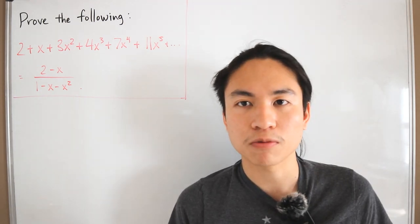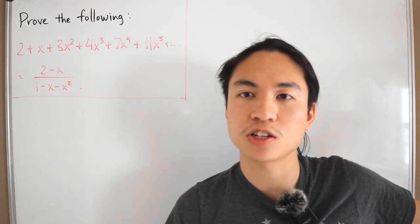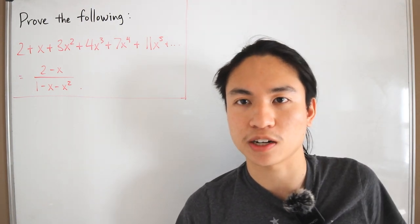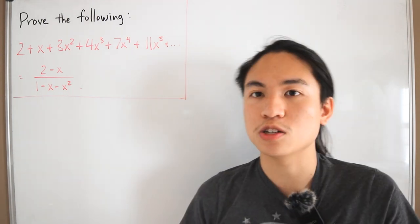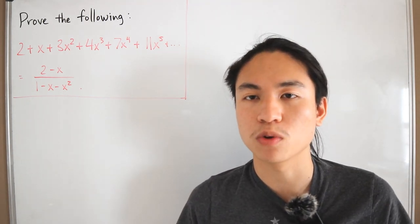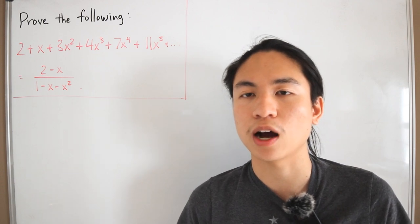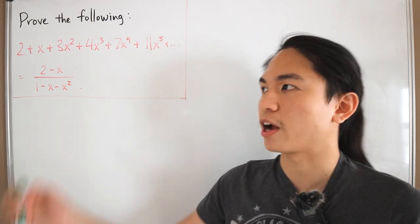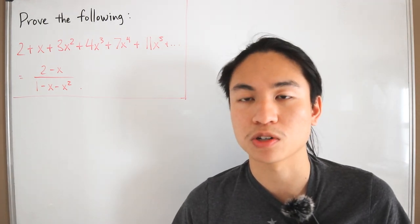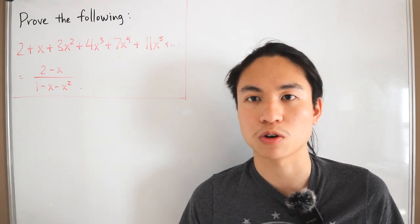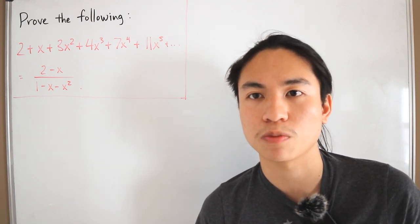We're not going to do a lot of re-indexing like I did for the generating function of Fibonacci numbers — I'll leave that link in the description below. Instead, we're taking a slightly easier approach, keeping everything in terms of the Lucas numbers and the recursive definition. So let's jump right in.